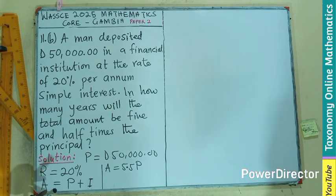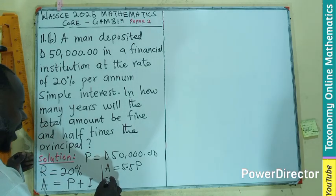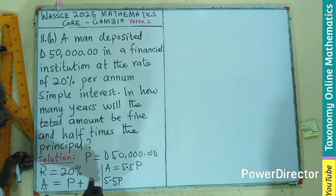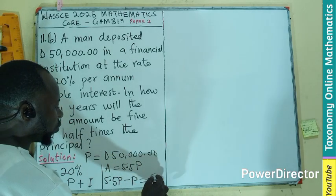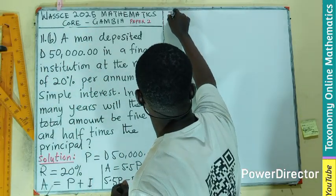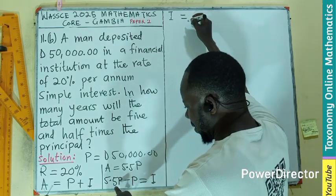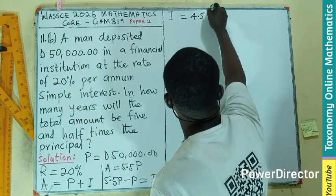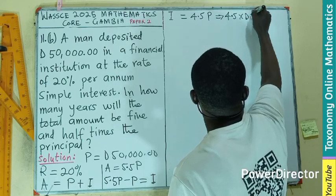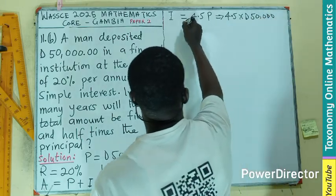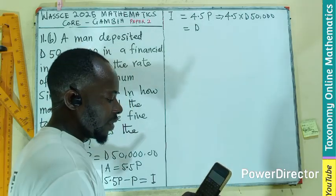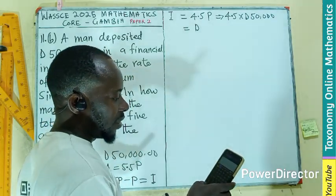So we can write: 5.5P equals Principal plus Interest. That means Interest equals 5.5P minus P, which gives us 4.5P. So the interest is 4.5 times the principal, meaning 4.5 times 50,000.